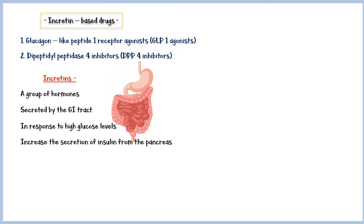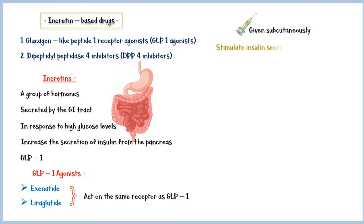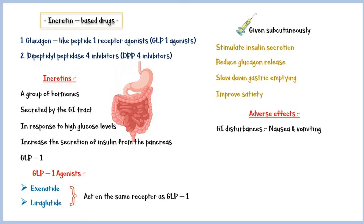GLP-1 agonists, like exenatide and liraglutide, act on the same receptor as GLP-1 and exert their effects. These medications are given subcutaneously, and they stimulate insulin secretion, reduce glucagon release, slow down gastric emptying, and improve satiety.